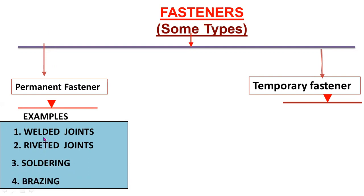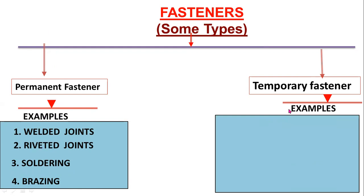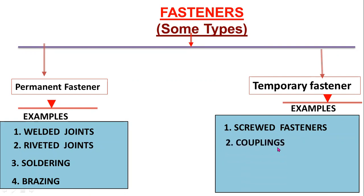Examples for temporary fasteners are screwed fasteners — screwed fasteners means bolted joints, bolts, and nuts. Bolts and nuts are called screwed fasteners. Couplings include shaft couplings, muff coupling, split muff coupling, flange couplings, flexible couplings, and universal joints.